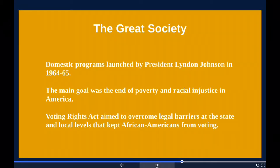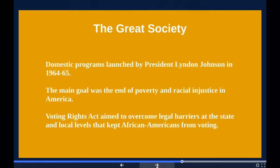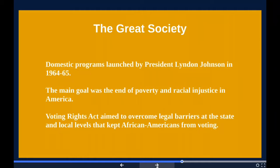The Great Society was a set of domestic programs in the United States launched by Democratic President Lyndon B. Johnson in 1964 and 1965. The main goal was the elimination of poverty and racial injustice. New major spending programs that addressed education, medical care, urban problems, rural poverty, and transportation were launched during this period. The Great Society in scope and sweep resembled the New Deal domestic agenda of Franklin Roosevelt. Some elements of the Great Society continue to this day, including Medicare, Medicaid, the Older Americans Act, and federal education funding.